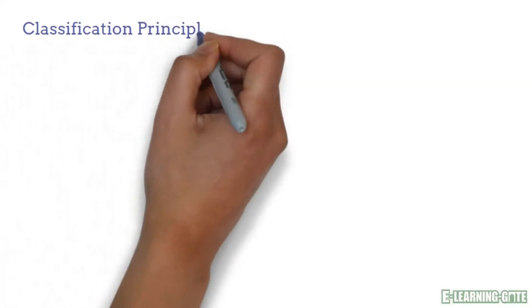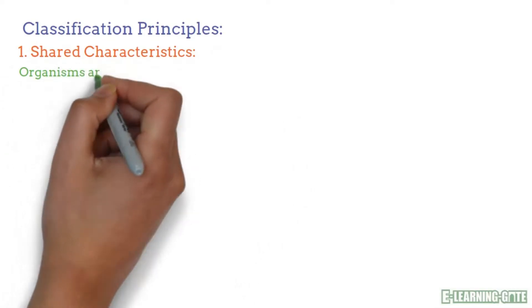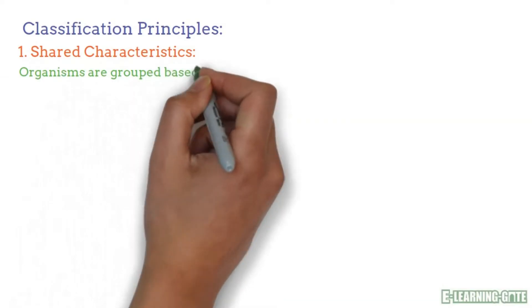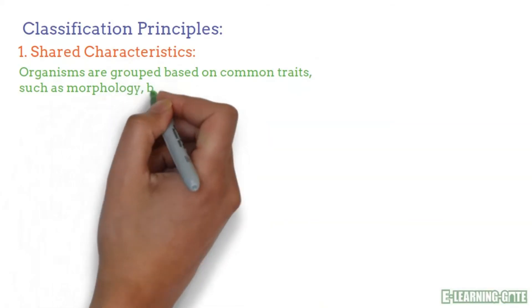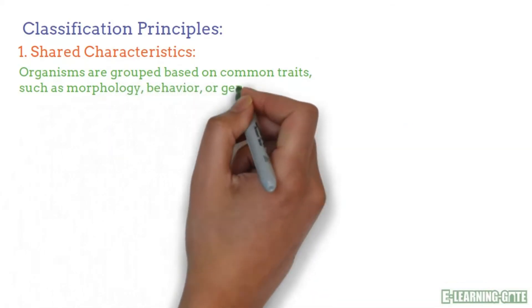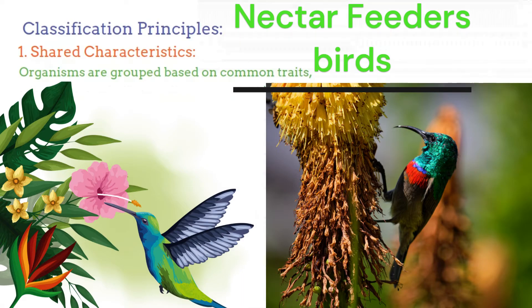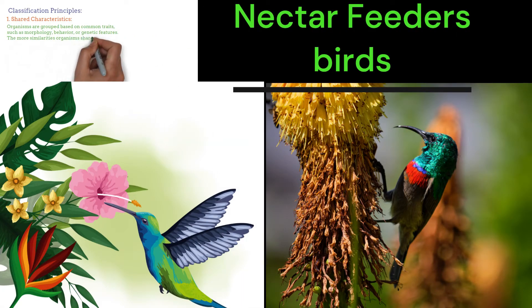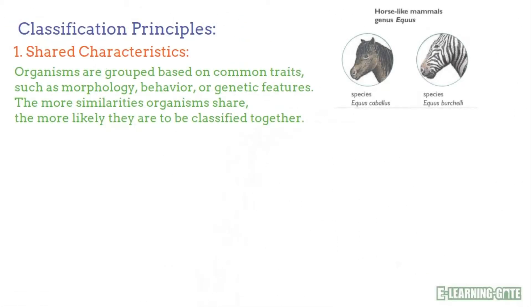Now let us see what the principles of classification are. Principle 1: Shared characteristics. Organisms are grouped based on common traits such as morphology, behavior, or genetic features. The more similarities organisms share, the more likely they are to be classified together. For example, nectar-feeding birds with a long, pointed beak — an adaptation perfect for reaching into flowers to extract nectar. Birds like hummingbirds and sunbirds share this characteristic and are classified as nectar feeders. Another example is the zebra and pony.